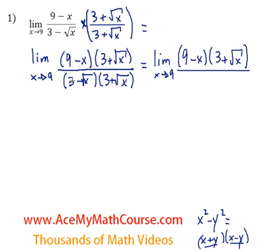Okay, so down below, 3 minus root x times 3 plus root x. 3 times 3 is 9. 3 times the root of x is just 3 root x. Minus root x times 3 is minus 3 root x. And finally, minus square root of x times square root of x is just minus x.